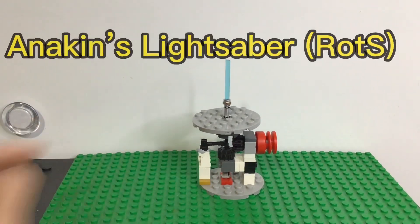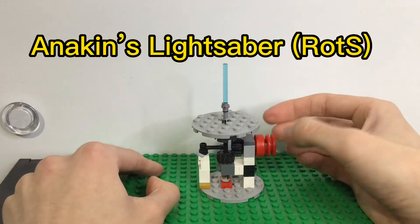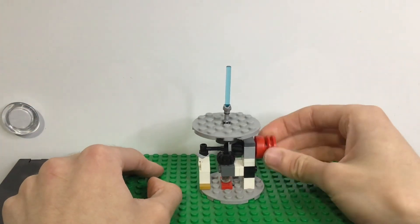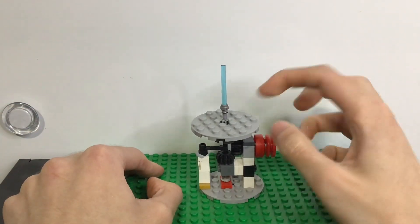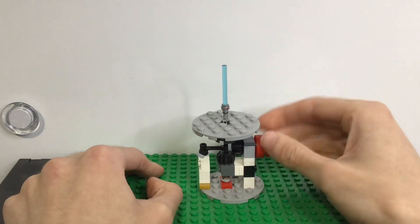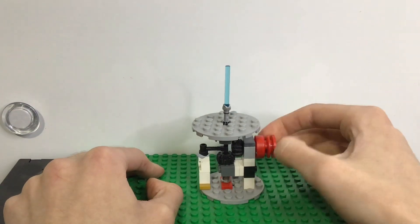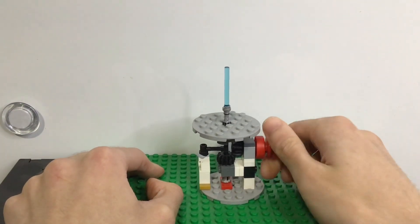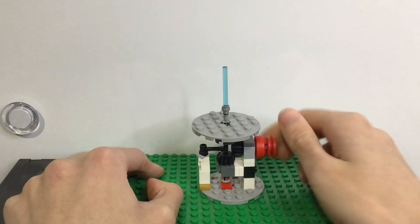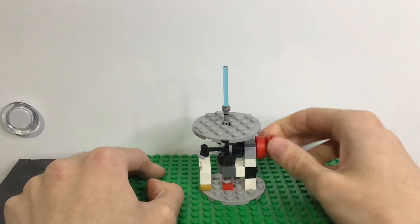Next up we have Anakin's lightsaber from Revenge of the Sith. This one was interesting to make. I had to put the black lines down the bottom, only colored one of the stripes black, and then I had a red dot in the middle and cut a chip out of the top. Yeah, that one was really fun - that was actually the first one I made.